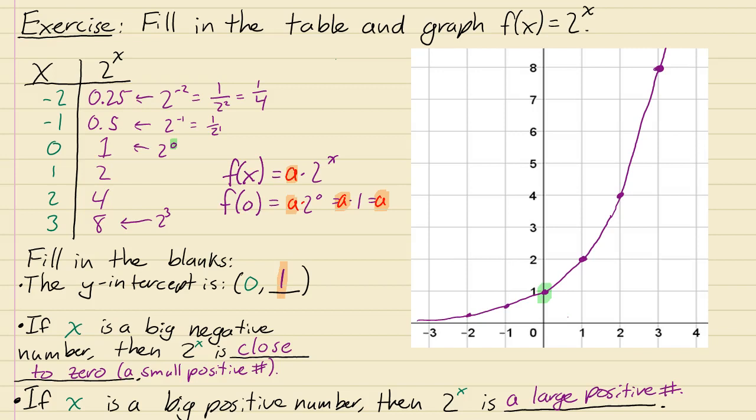If x is something like negative two or any other large negative number, then two to the negative two becomes one over two to the power positive two, which ends up being like one divided by four. And if x was a really big negative number, like, I don't know, let's say like two to the power negative 100, then that would be one over two to the power 100, which is a tiny, tiny number. It's really, really close to zero.